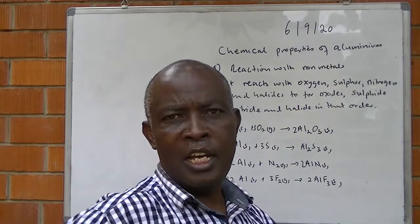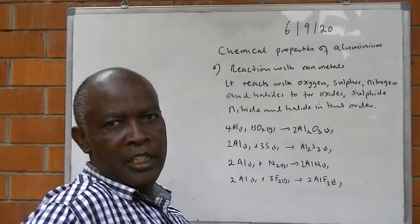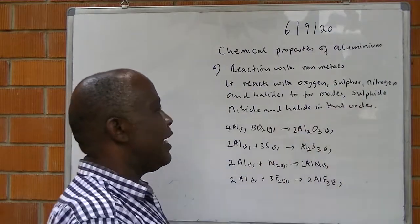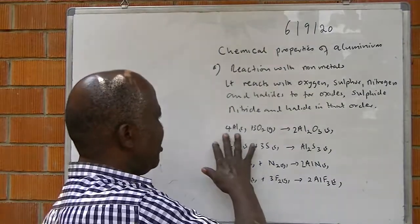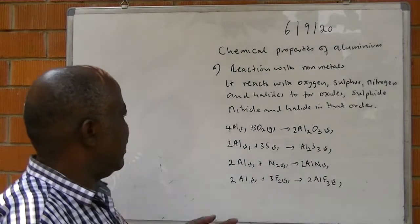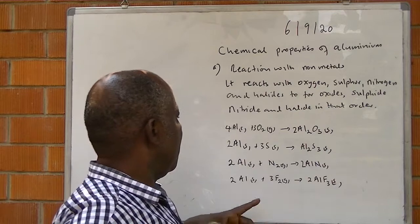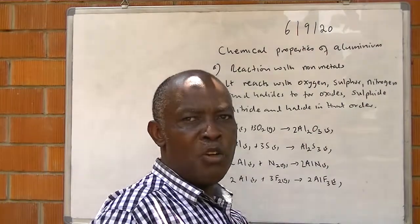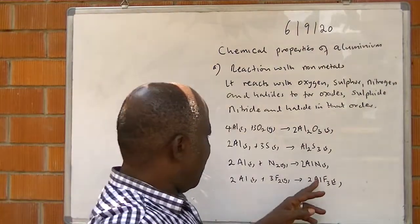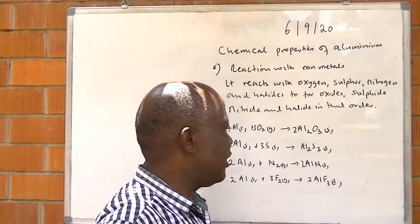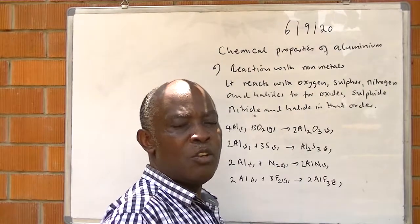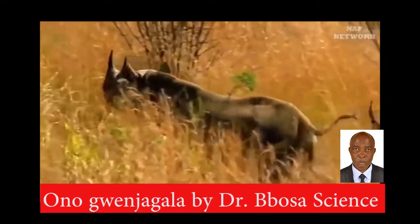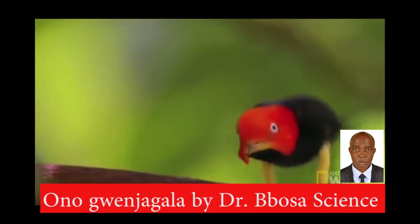Aluminium reacts with non-metals: Aluminium reacts with Oxygen, Sulphur, Nitrogen, and Halides to form Oxides, Sulphide, Nitride, and Halide respectively. Aluminium plus Oxygen gives Aluminium Oxide; Aluminium plus Sulphur gives Aluminium Sulphide; Aluminium plus Nitrogen gives Aluminium Nitride; Aluminium plus Fluorine gives Aluminium Fluoride. The Fluoride and Oxide are predominantly ionic, while the others are predominantly covalent. Thank you.